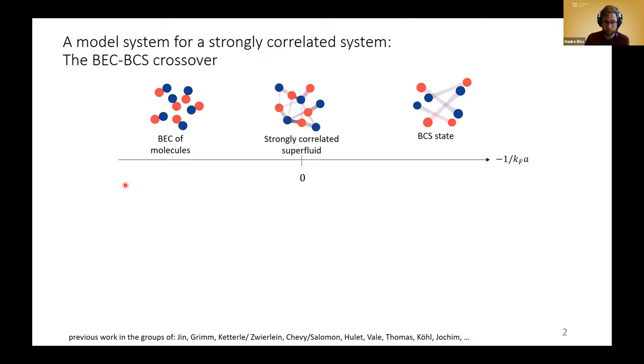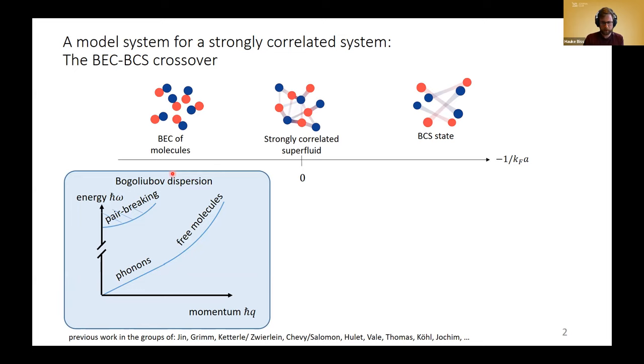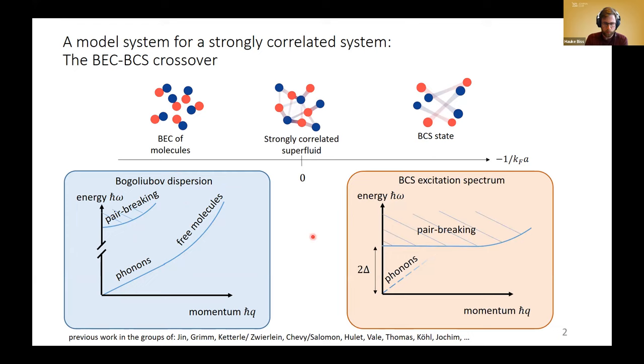What do we expect in the excitation spectrums? We know that for both limits, a BEC of molecules is a weakly repulsive Bose gas, which has the Bogoliubov dispersion. For low momenta, we can excite the molecules collectively, so there's a sound mode typical for a superfluid. For large momenta, each individual molecule can receive energy, so this transforms into a quadratic free particle dispersion. At even larger energies, we can break these molecules, so there's a pair breaking continuum. For a BCS state, we expect a collective mode, phonons, which is a Goldstone mode. And there are pair breaking excitations, but they are now at lower energy, gapped by 2Δ, where Δ is the superfluid order parameter.